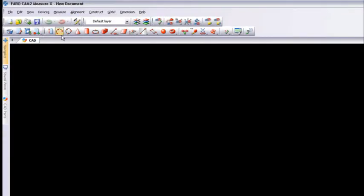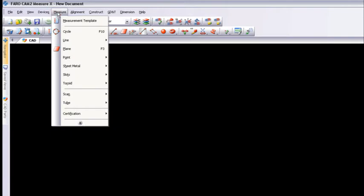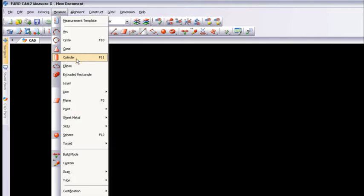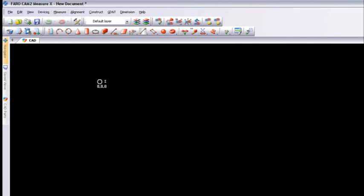Go right up to the measure menu and I'm going to go down to this down arrow here just to show more of those options. I've got cylinder right there. I've got CAM2X up today, so now that I'm in cylinder mode, notice that down in the bottom left hand corner it's saying single point mode is selected. I'm just measuring first point or point number one on my cylinder.